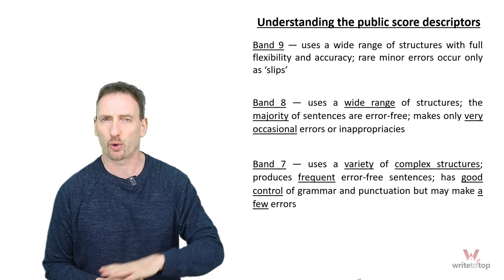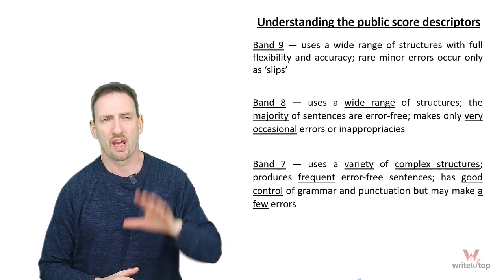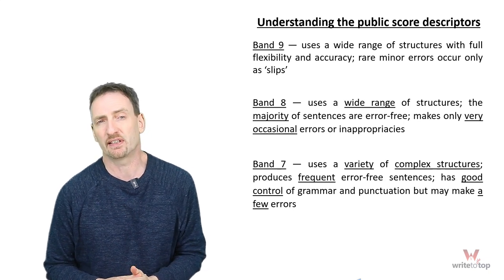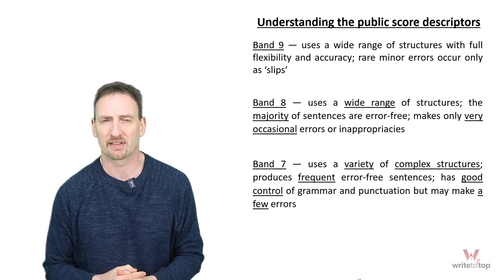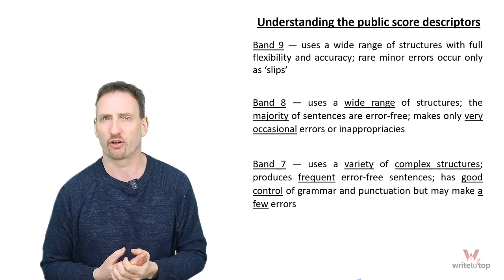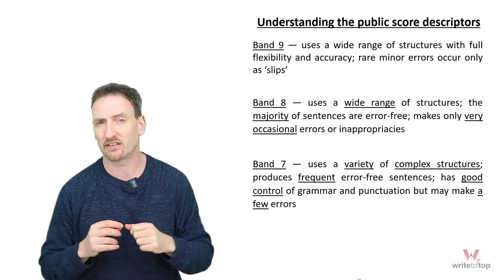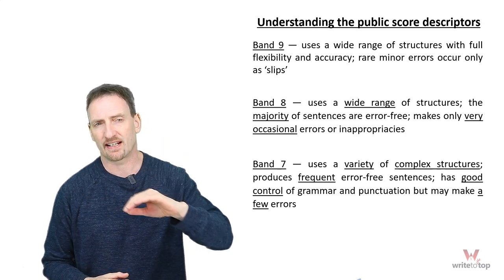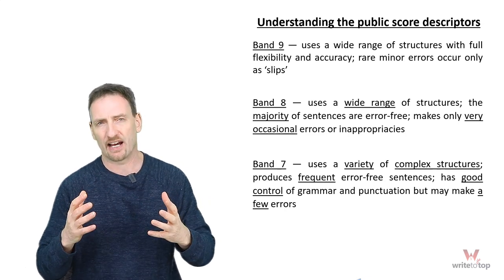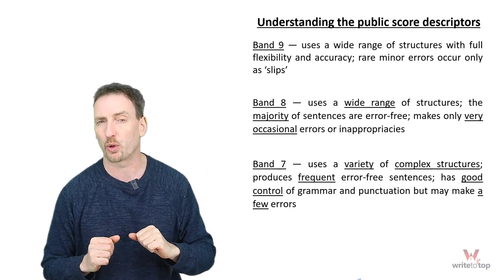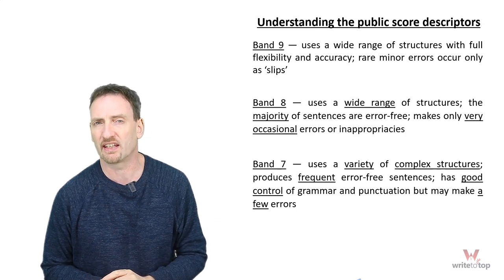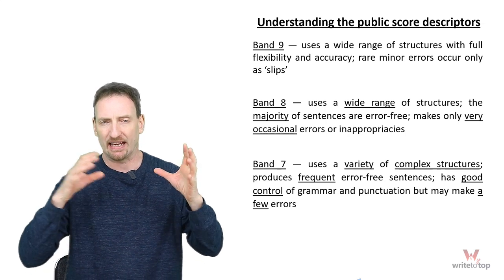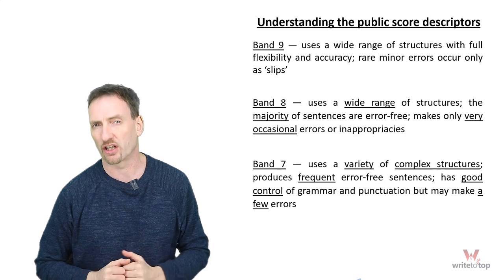Today we're going to look at one of the individual criteria — grammatical range and accuracy, basically grammar — and we're going to see how these elements affect your writing score. We'll start with the public score descriptors available on the IELTS website. For band nine, you need to use a wide range of structures with full flexibility and accuracy. Rare minor errors occur only as slips — you basically have to be perfect. As you go down in bands, the number of errors allowed goes up but your score goes down. For band eight, the majority of sentences are error-free.